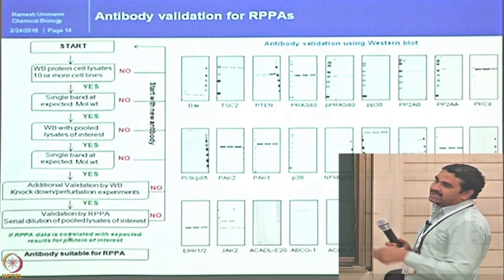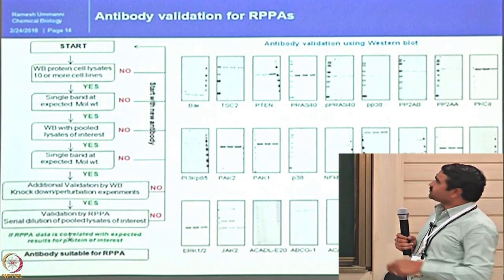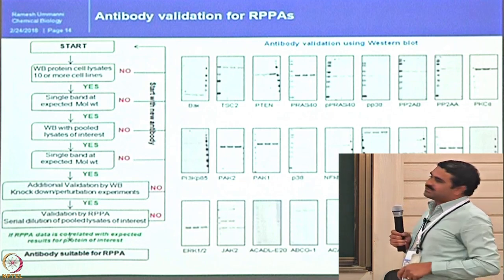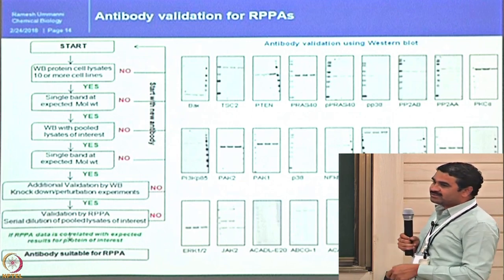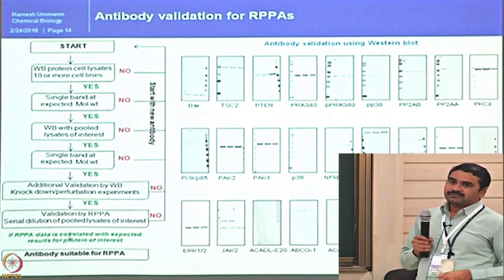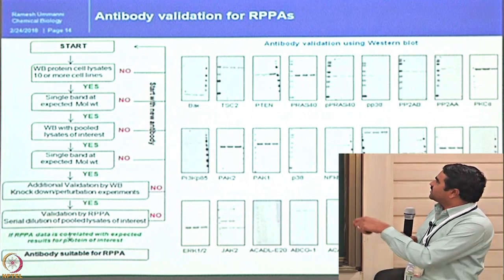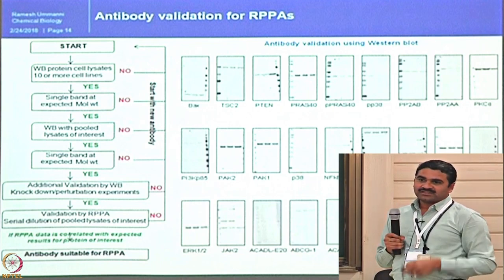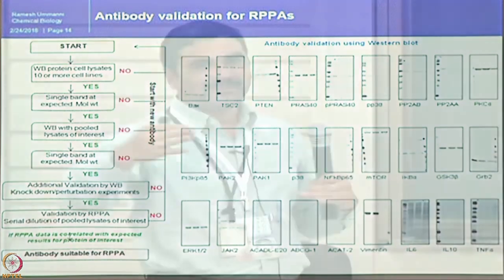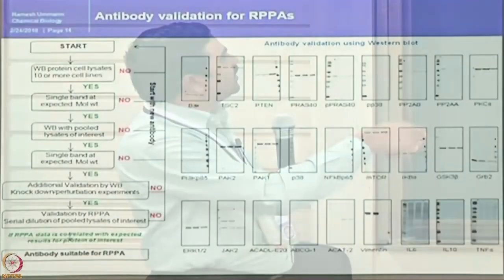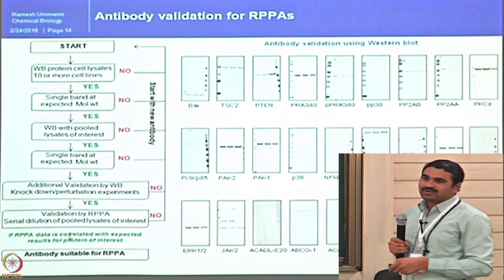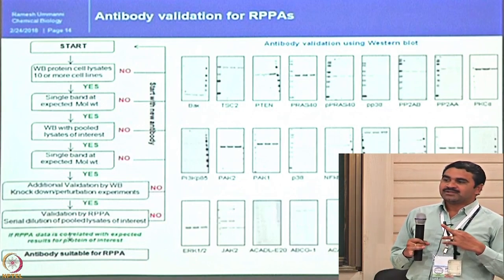Our approach for antibody validation starts with western blotting: take 10 different cell lysates from more cell lines, run 10 different lanes, and do a western blot. If the antibody gives a single band, go to the next step — then pool the lysates from 10 or more different cell lines and run a single lane. This means that even in a complex mix, the antibody has the capacity to recognize the protein of interest without non-specificity. If it gives a single band, it goes to additional validation steps using knockdown and stimulation experiments.